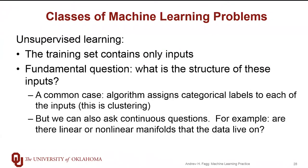On the far end of the spectrum is unsupervised learning, where the training set contains only a set of inputs — there is no desired output corresponding to each input. With unsupervised learning, we're trying to understand the structure of the inputs. One subcategory is clustering, where the model takes an input and provides a class label, but makes its own choice as to what the class labels are — not imposed by the training set.